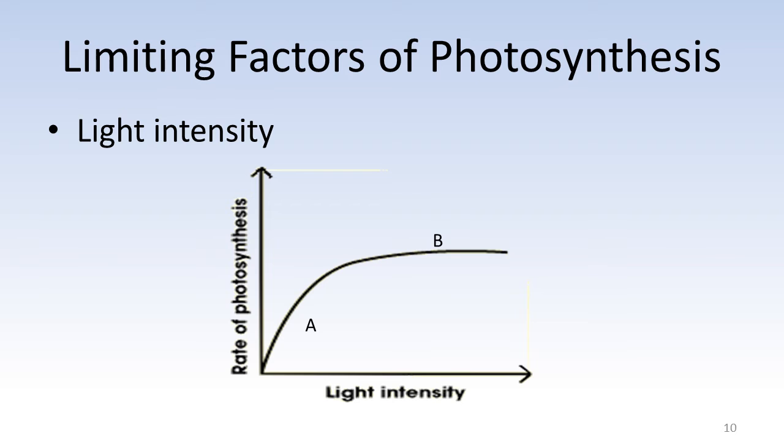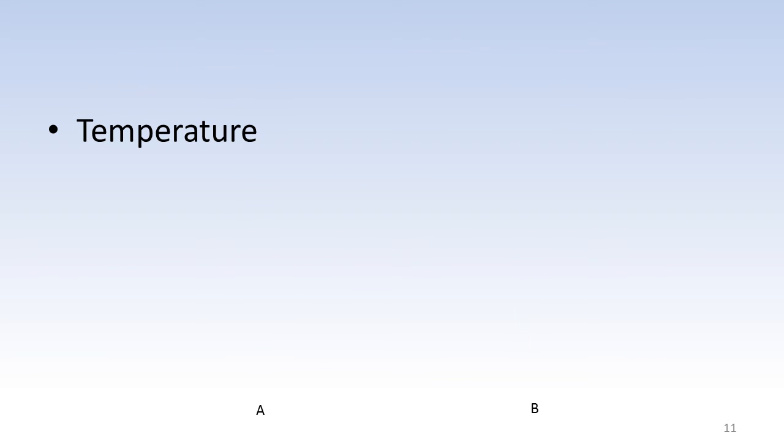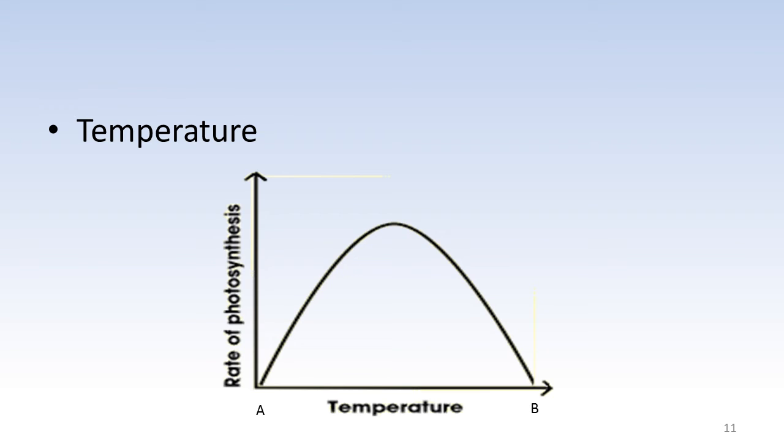The process of photosynthesis is actually controlled by enzymes. Enzymes are proteins that function within a narrow temperature range. Therefore, as this graph is showing, if the temperature is low at point A, then the rate of photosynthesis will also be very slow, because the enzymes will not be functioning properly.